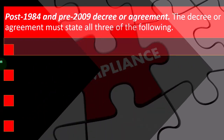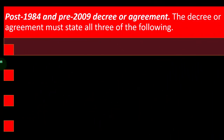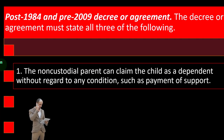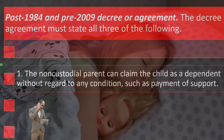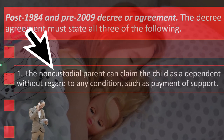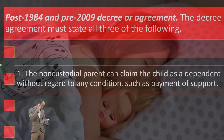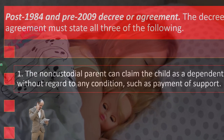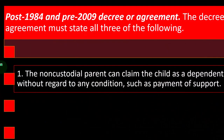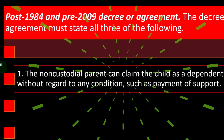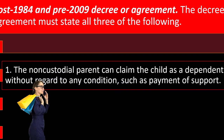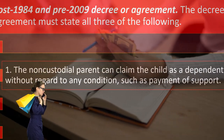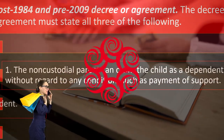Post-1984 and pre-2009 decree or agreement: the decree or agreement must state all three of the following. One: the non-custodial parent can claim the child as a dependent without regard to any condition such as payment of support. The key is that the agreement can't be tied directly to payment of support, because that would essentially mean you're paying for the tax benefit, which isn't appropriate.